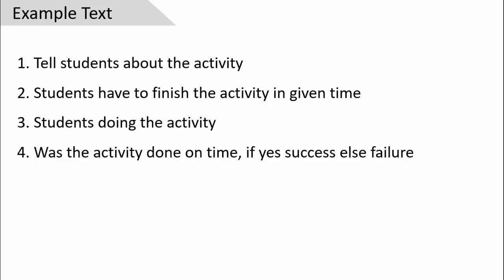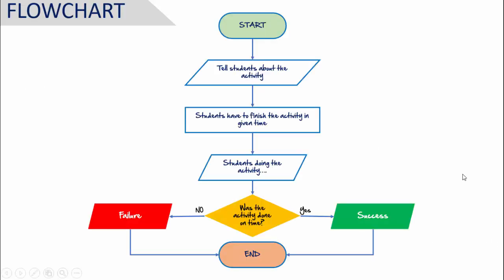In today's tutorial, I'm going to show you how to convert simple text into a flowchart in PowerPoint. I have used four steps: the first step is to tell students about the activity, the second step is students have to finish the activity in the given time, the third is students started doing the activity, and the fourth is 'Was the activity done on time?' If yes, it's a success; if not, it's a failure. Let's see how to convert this into a flowchart.